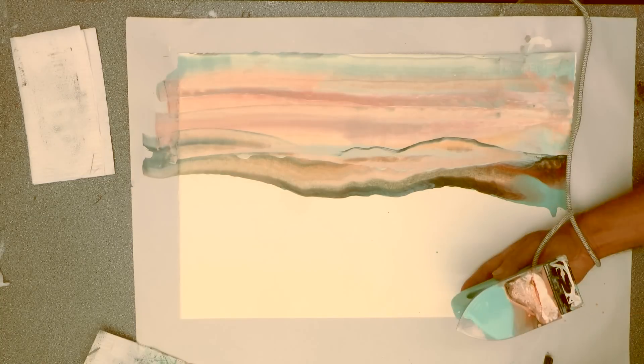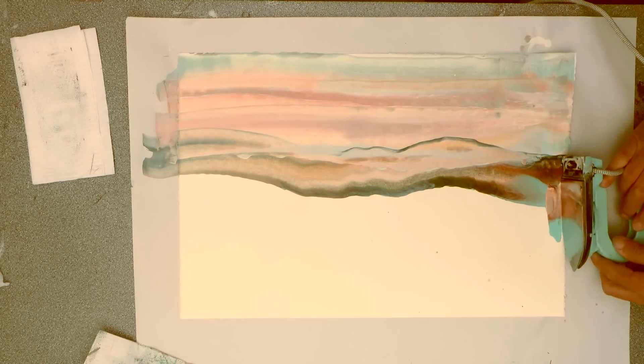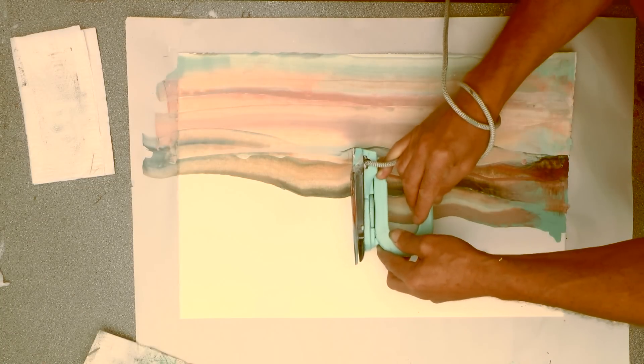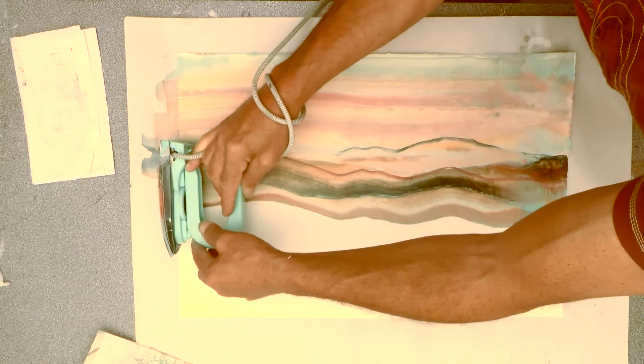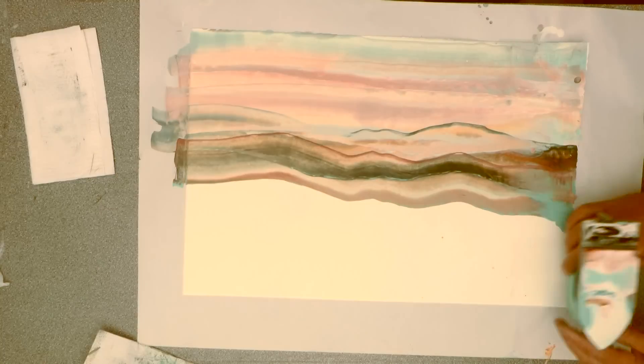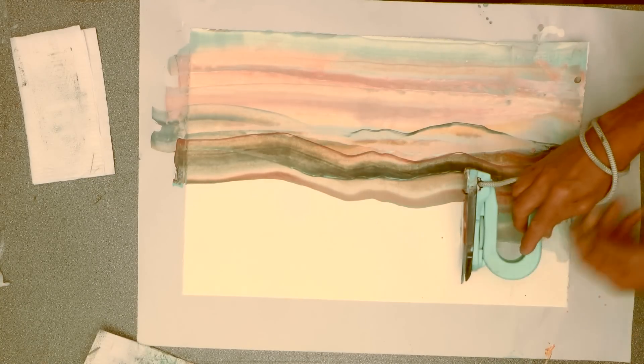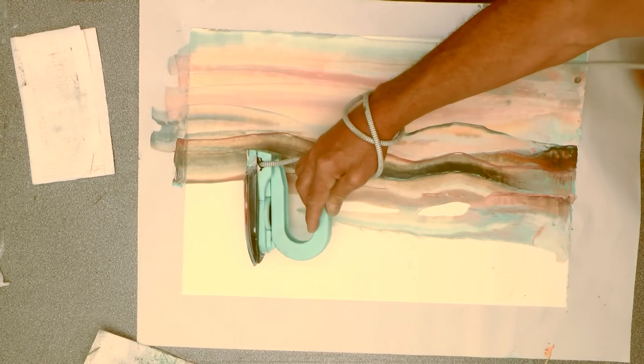Now I'm going to speed this up a bit because otherwise it gets a bit tedious to watch. And I'm echoing the shape of the horizon line as I go across there. The paper's not taped down so it can move about. And even if you run out of wax like I have done here, just keep going.